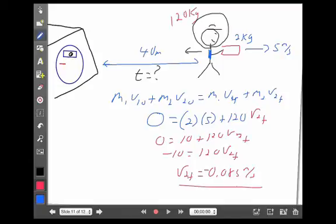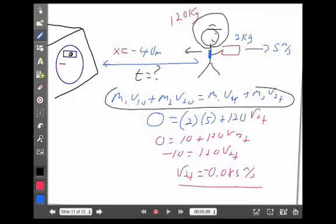That doesn't answer my time question, though. Here's the tricky part, and here's where students often make a mistake. They'll think, I've got a displacement of not 40 meters, but negative 40 meters, because I'm going to be going backwards 40 meters. And what people will often try to do is to figure out an acceleration.